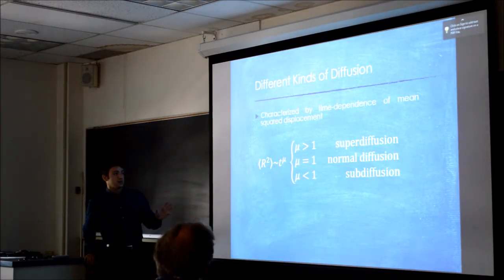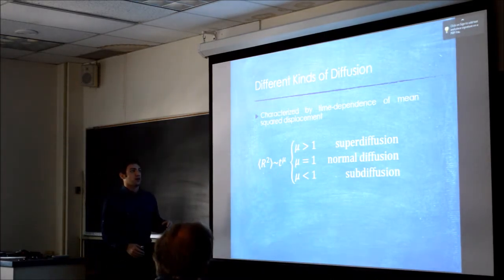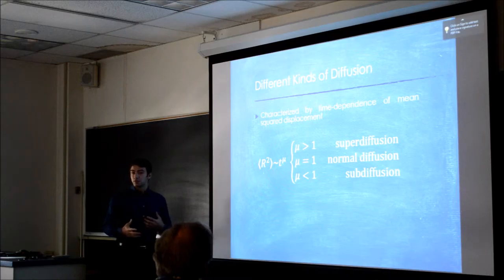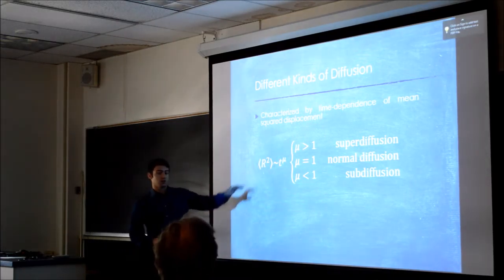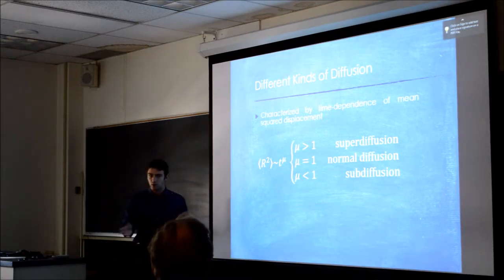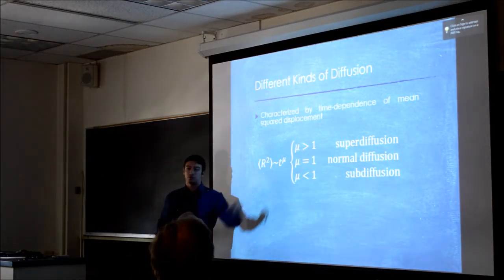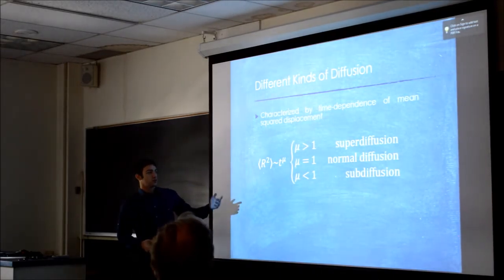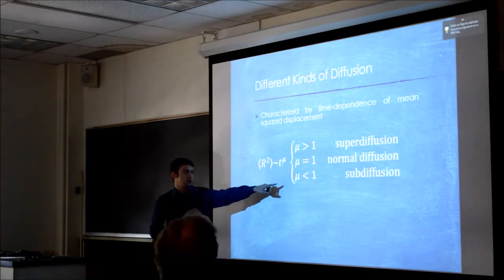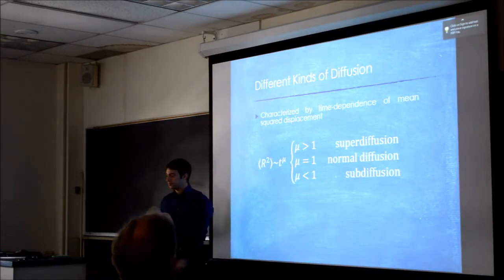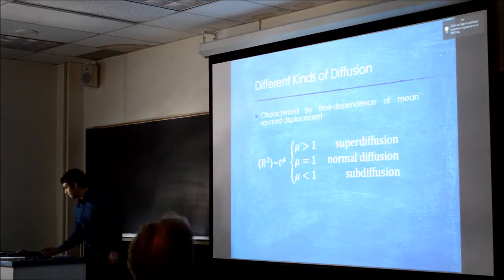So quantitatively, these different kinds of diffusion can be characterized by how their mean squared displacement varies with time. For normal diffusion, the mean squared displacement, if you start doing a random walk, the mean square distance from where you start scales as just t. This exponent is 1. For super diffusion, you go farther, n is greater than 1. And for sub-diffusion, you don't get as far, it's less than 1.